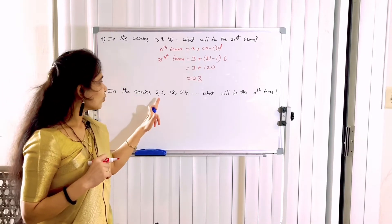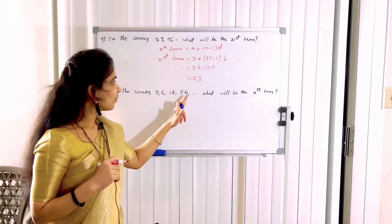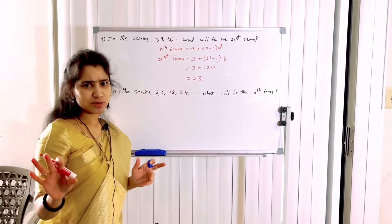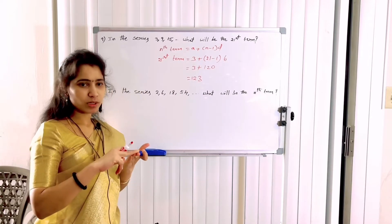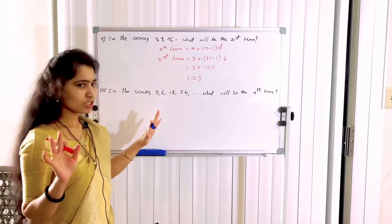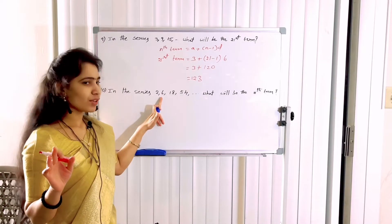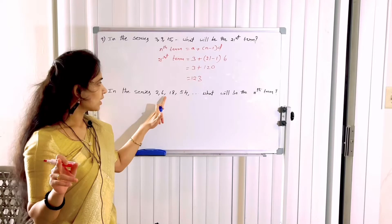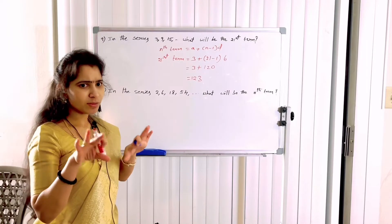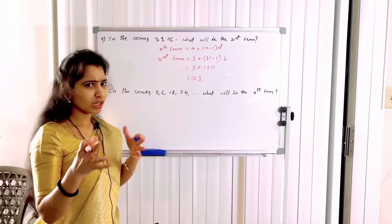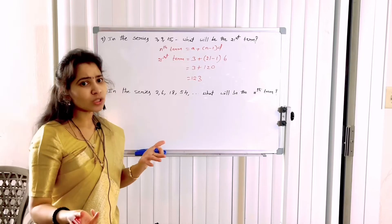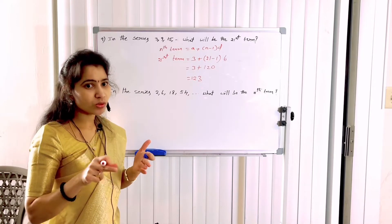Next problem: In the series 2, 6, 18, 54 — what will be the 8th term? There are two series types: Arithmetic Progression and Geometric Progression. Let's check the difference first. The difference between 2 and 6 is 4. The difference between 6 and 18 is 12. Since the differences are not uniform, it is not Arithmetic Progression.